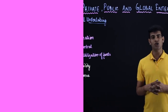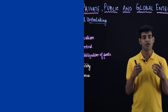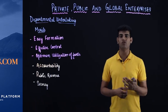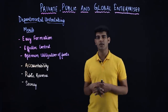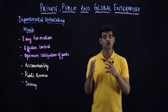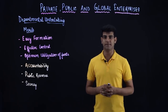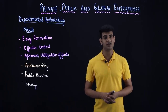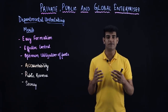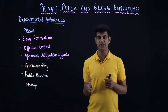Next is accountability — because departmental undertakings are under direct government control, if any problem arises, the government has to answer very strong questions in parliament about the steps taken. So accountability is also high. Next is public revenue — all revenue from departmental undertakings goes into the government treasury, helping increase public revenue. There is also secrecy, because departmental undertakings don't need to publish their books of accounts — for example, defense never mentions its books of accounts, so it performs quite secretly.